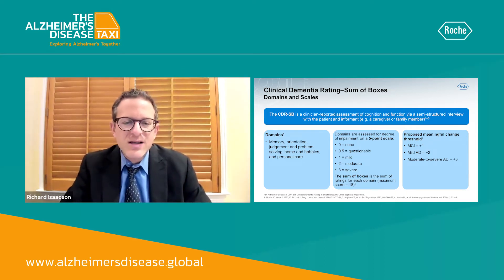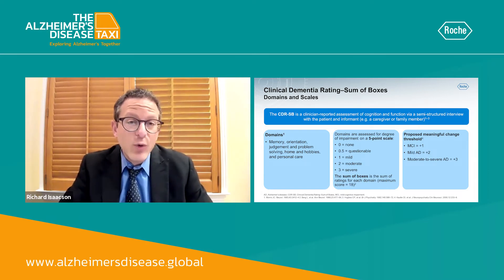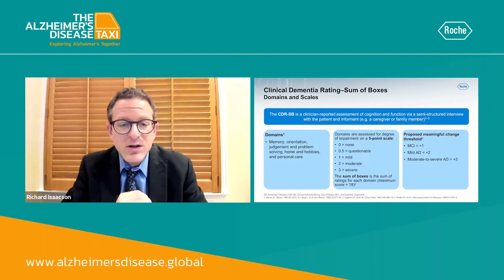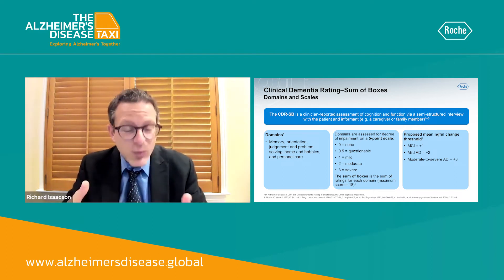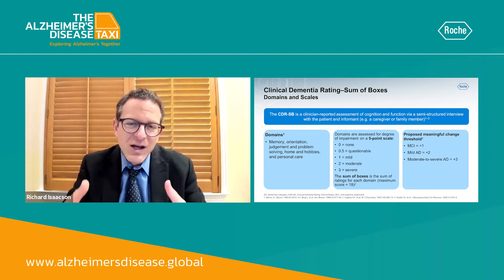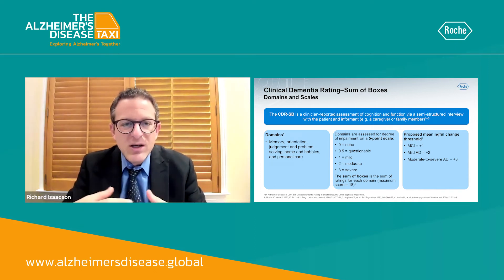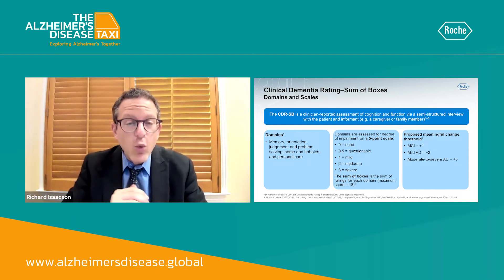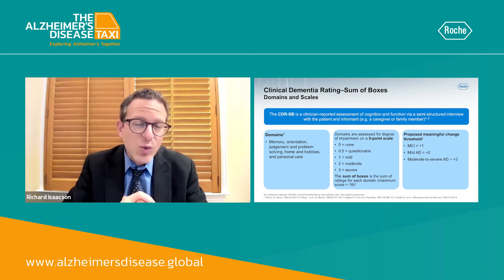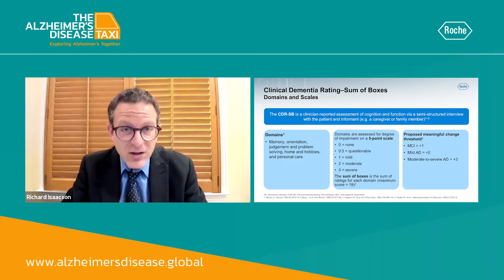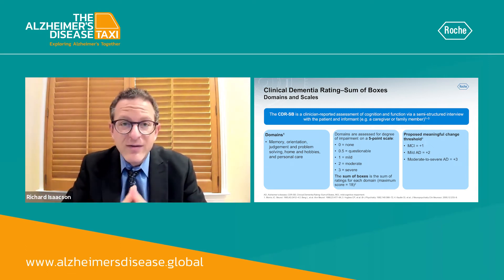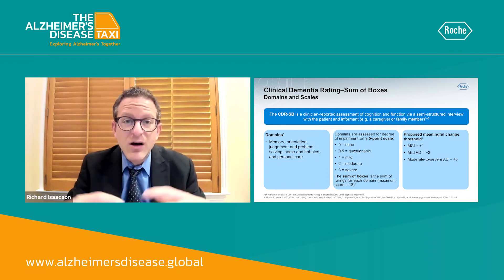Each of the cognitive domains are assessed for degree of impairment by one of five items. Zero denotes no impairment — normal function, normal cognition. Questionable would be 0.5, which may correspond to early mild cognitive impairment or early signs and symptoms, but not progressing to the degree of dementia. One would denote mild, two would denote moderate, and three would denote severe, implying whether or not the person has mild, moderate, or severe dementia.